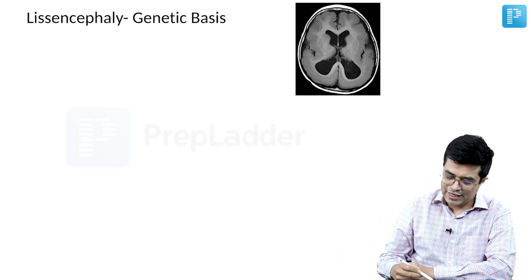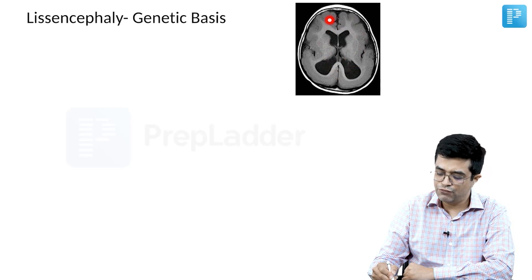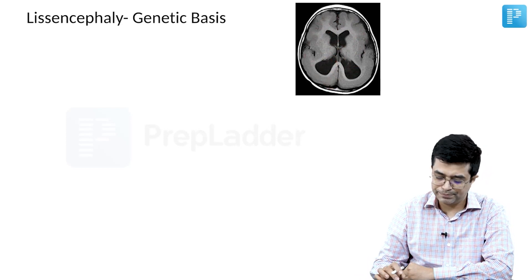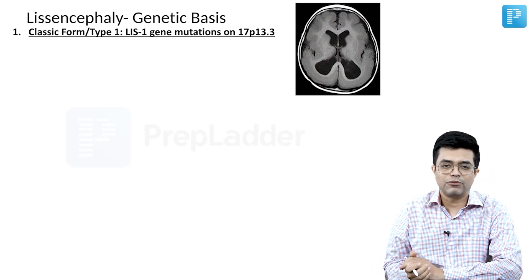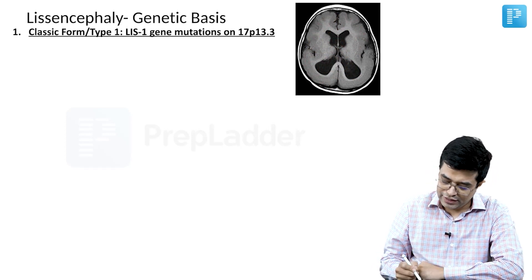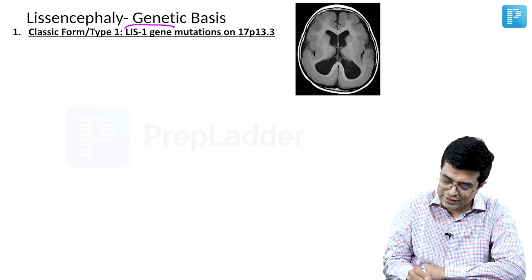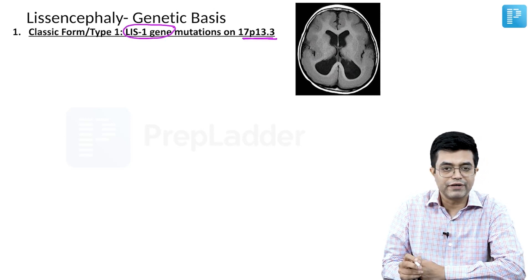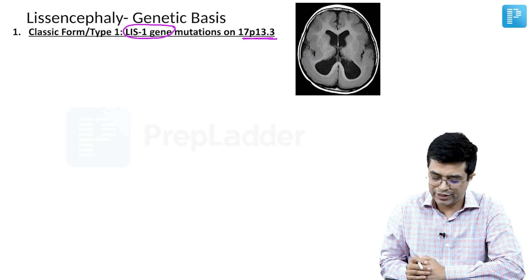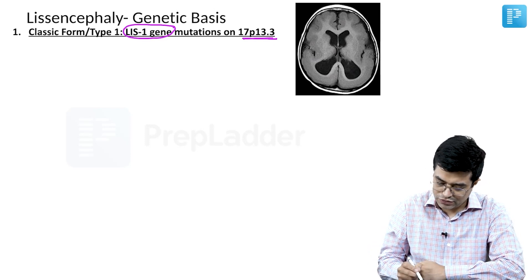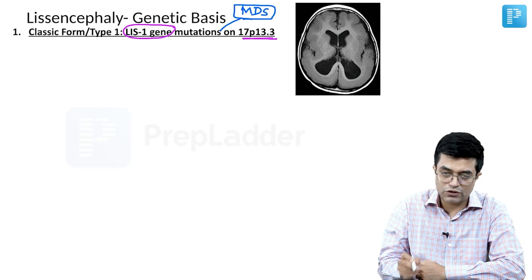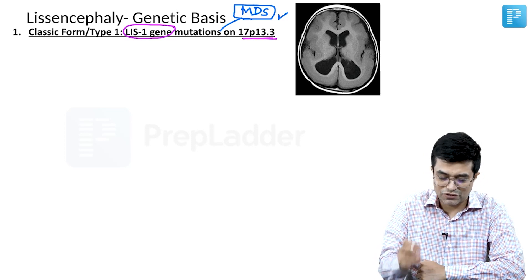Lissencephaly — as you can see in this image — is a smooth brain with enlargement of the ventricles. The classic form, also called Type 1 lissencephaly, is due to LIS1 gene mutations. The LIS1 gene is present on the short arm of chromosome 17 at 17p13.3. This variety is also associated with Miller-Dicker syndrome (MDS) — not myelodysplasia, but Miller-Dicker syndrome.